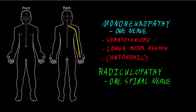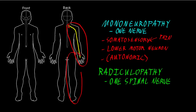Pain is a very common somatosensory abnormality for both mononeuropathy and radiculopathy, but often in a slightly different pattern. The most common mononeuropathies and radiculopathies usually affect the limbs — one arm or one leg — though other nerves and spinal nerve root levels can be involved, they tend to be much less common.